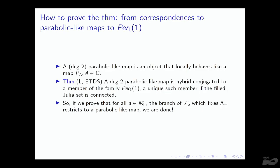For proving the theorem, we pass from correspondences to an object called a parabolic-like map, and from parabolic-like maps to PER(1,1). A parabolic-like map is an object that locally behaves like a map P_A on a neighborhood of its Filled Julia set. In my PhD thesis, I proved that a degree-2 parabolic-like map is hybrid conjugated to a unique member of the family PER(1,1), provided the Filled Julia set is connected. So if we prove that for all parameters in the connectedness locus the branch fixing the backward limit set restricts to a parabolic-like map, we are done.